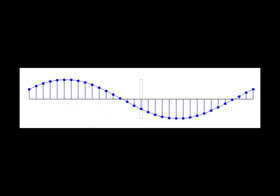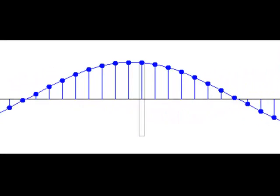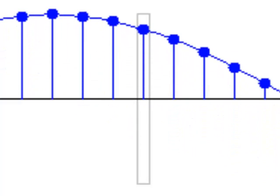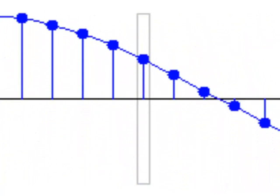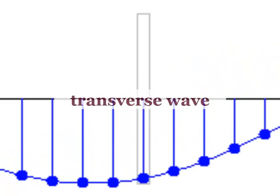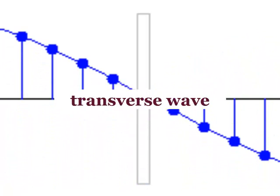When you shake the free end of a rope up and down, the motion of the rope is at right angles to the direction the wave travels. Whenever the motion of the medium is at right angles to the direction it travels, the wave is a transverse wave.